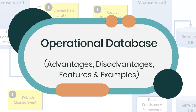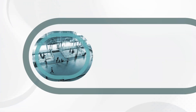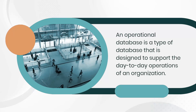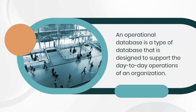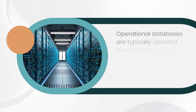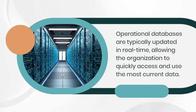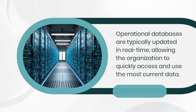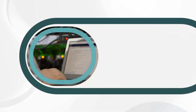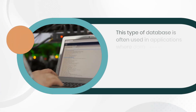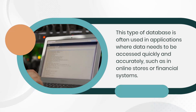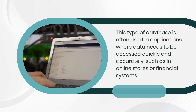What is an Operational Database? An Operational Database is a type of database designed to support the day-to-day operations of an organization. Operational databases are typically updated in real-time, allowing the organization to quickly access and use the most current data. This type of database is often used in applications where data needs to be accessed quickly and accurately, such as in online stores or financial systems.